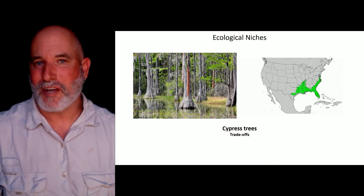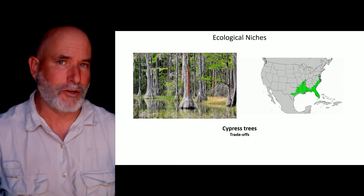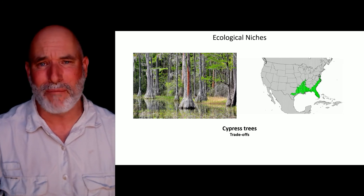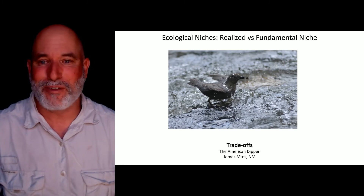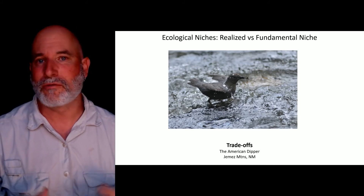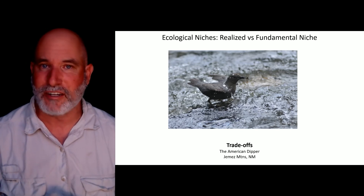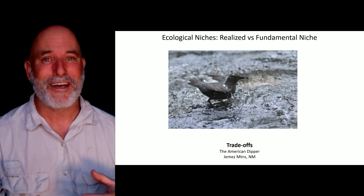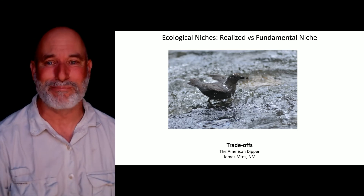Another trade-off: cypress trees can grow in very wet, swampy environments where upland trees like pines and oaks cannot grow, but those physiological adaptations to wet environments prevent them from growing as fast. The American Dipper is the only bird that forages in streams the way it does, so it doesn't face much competition there — but it couldn't forage along stream edges or in trees as effectively as warblers and other insect-eating birds. There are no perfectly adapted species; there are always trade-offs, and those trade-offs are adaptations allowing species to exist in their n-dimensional hypervolume.